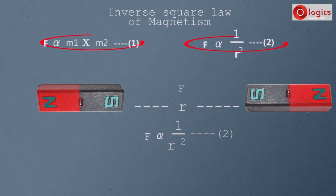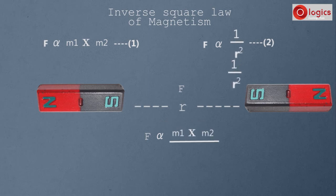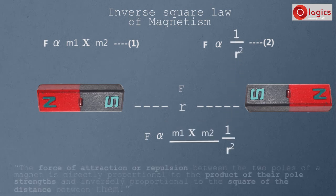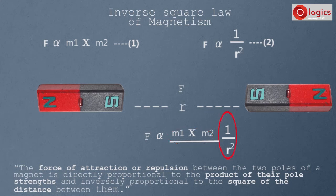From both equations we get the force of attraction or repulsion: F is directly proportional to M1 into M2 divided by R square. The inverse square law of magnetism states that the force of attraction or repulsion between the two poles of a magnet is directly proportional to the product of their pole strengths and inversely proportional to the square of the distance between them.